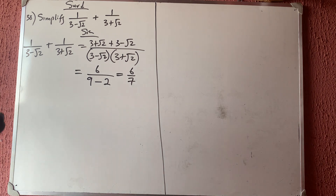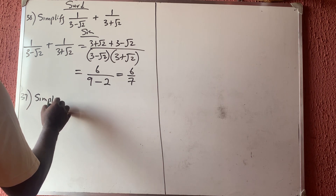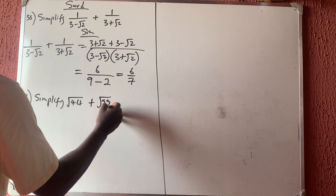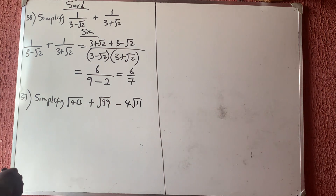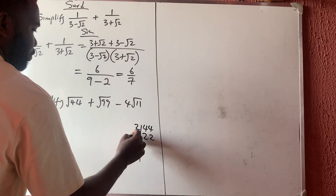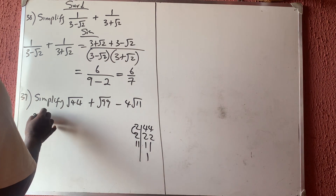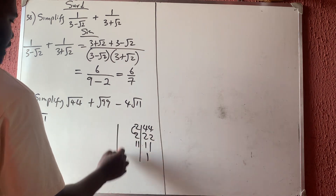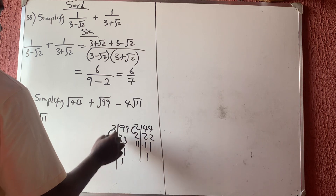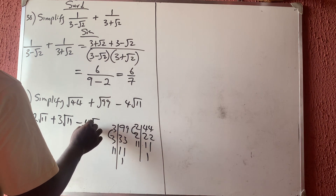Question 39 says: simplify √44 plus √99 minus 4√11. For √44: 44 divides to 2, 22, 2, 11 — anybody that is doubled stays outside, single stays inside, giving 2√11. For √99: 99 divides to 3, 33, 3, 11 — applying the same rule gives 3√11. Then minus 4√11.